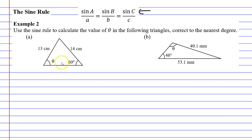We'll start on question A and we will label the 60 degree angle with capital A and we'll label θ with capital B. We don't really need to label capital C but we'll do it anyway. Opposite capital B is lowercase b, opposite capital A is lowercase a, and opposite capital C is lowercase c. We really don't need C because there's no value next to it, so we're going to completely ignore that in our formula.